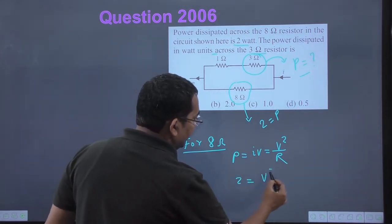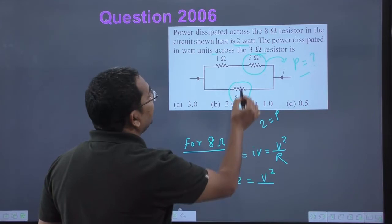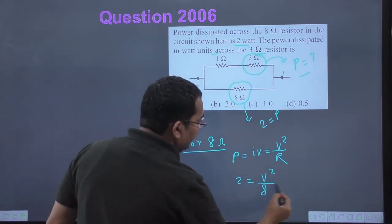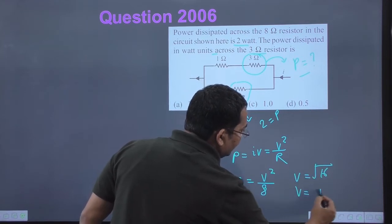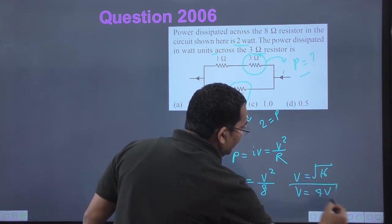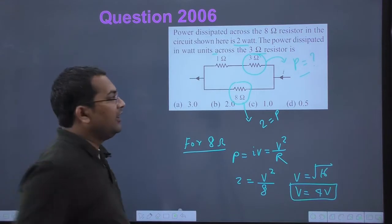The resistance is 8 ohms, so the value of V will be square root of 16, which is 4 volts. So 4 volts potential difference is created across this.